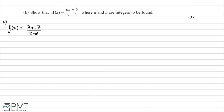In part B, we're asked to show that f(f(x)) = (ax + b) / (x - 3), where a and b are integers to be found. We need to compose f with itself — substituting f(x) in place of x everywhere in f(x). So f(f(x)) = [3·f(x) - 7] / [f(x) - 2].